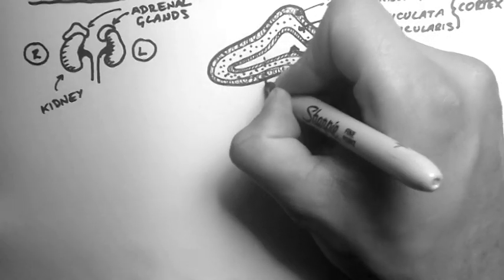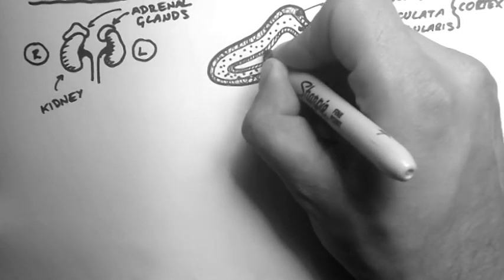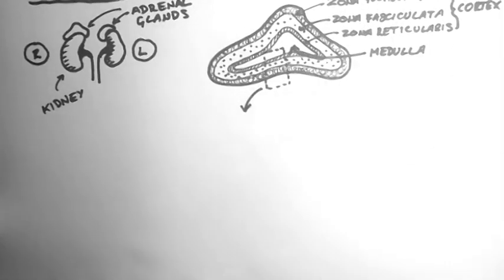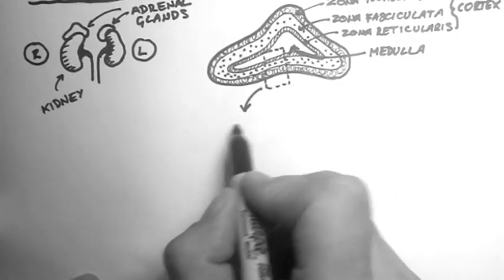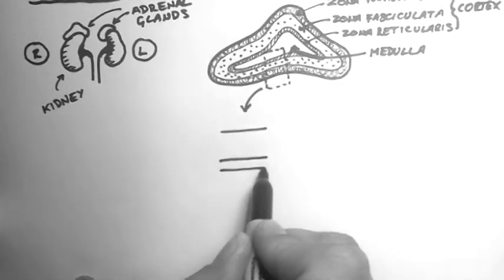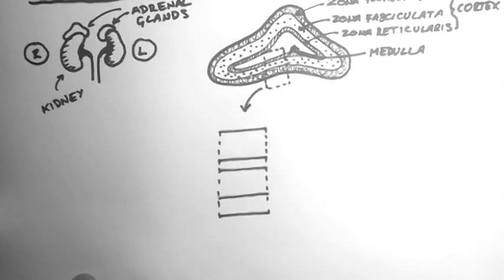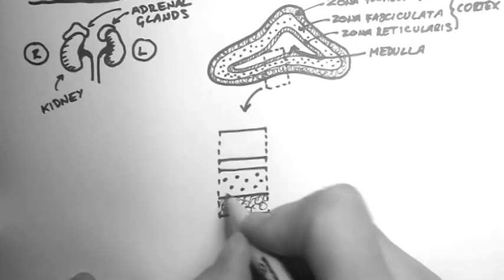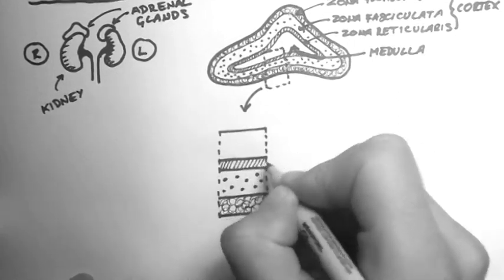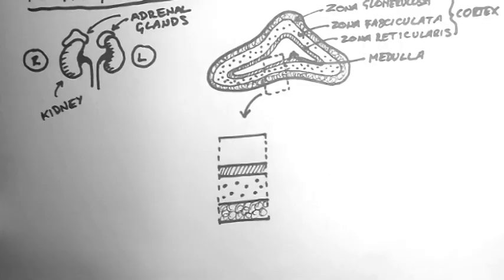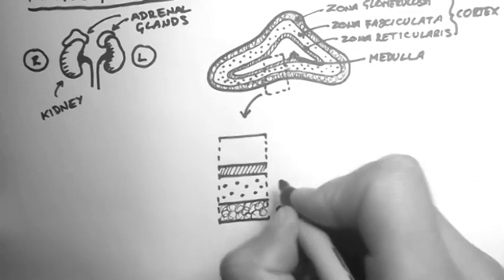Now I want to have a closer look at a section through the adrenal gland. So here are those four layers. I'll just label them G, F, R and M.